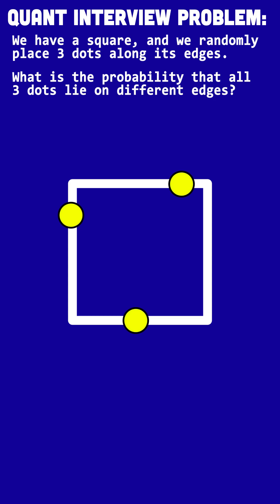First of all, we need to define what an edge is. These are called edges. We want the three dots to be on different edges, so something like this or something like this. Okay, we can't have anything looking like this. We want them to be on different edges.